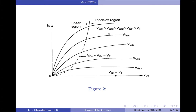With the gate-to-source voltage VGS below the threshold voltage VT, the MOSFET operates in the cut-off region. No drain current flows in this mode and the applied drain-to-source voltage VDS is supported by the body-to-collector PN junction. Therefore, the maximum applied voltage should be below the avalanche breakdown voltage of this junction, denoted by VDSS, in order to avoid destruction of the device.